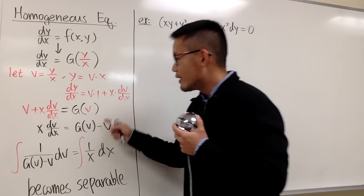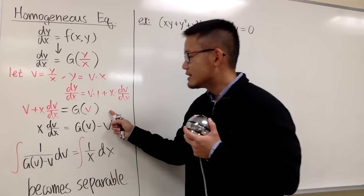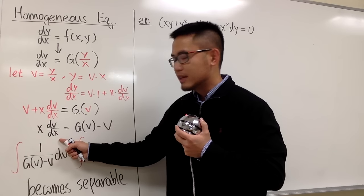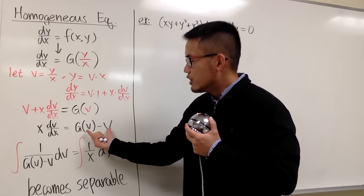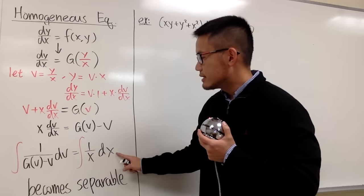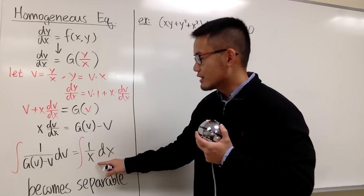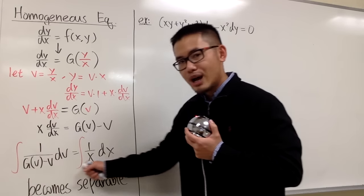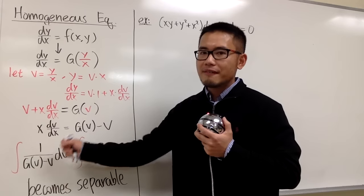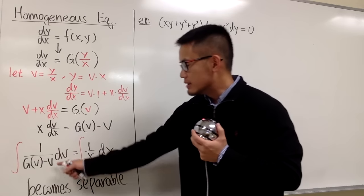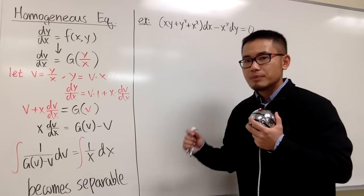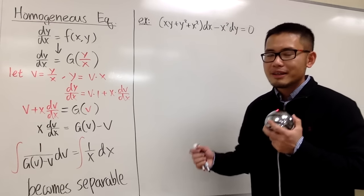Once we have this, we subtract v from both sides to get x times dv/dx equals g(v) minus v on the right-hand side. We then divide by g(v) minus v on both sides, multiply dx on both sides, and divide by x on both sides to get 1/x. This becomes separable — once it's separable we can solve it, and after solving, just make sure you write your answer back in terms of y and x.